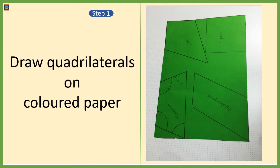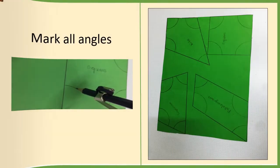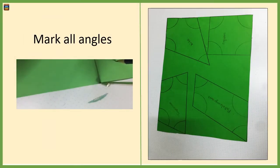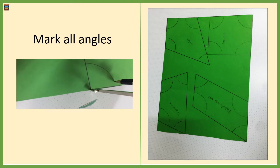Let's start the activity with drawing some quadrilaterals on colored paper. Next we want to mark up all the angles of all the quadrilaterals using a compass with a radius of four centimeters.